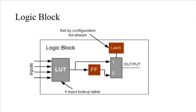The logic block consists of a LUT — nothing but a lookup table — and a latch, a flip-flop, and a mux. The bitstream will be generated and configured by the configuration modes. You are going to have inputs for this LUT. The LUT is different from the truth table. Based on this, you are going to have the functionality of the logic block.